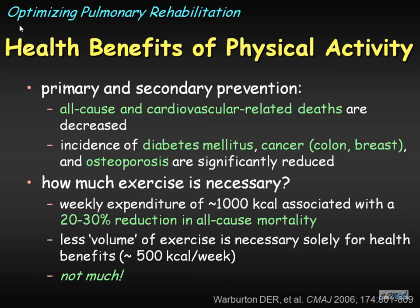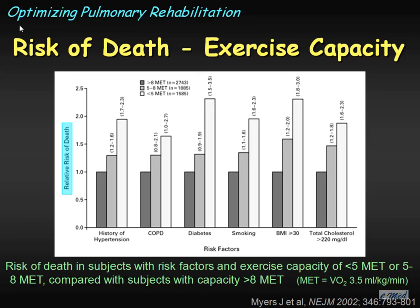I like this work from Jonathan Myers, published in the New England Journal in 2002. This is a very unique population — men referred for cardiac stress testing, followed for a period of time with a number of risk factors including hypertension, COPD, diabetes, smoking, obesity, and hypercholesterolemia. This shows the relative risk of death for individuals who were fit, moderately fit with an estimated MET of 5 to 8, and then unfit. What is obvious is that for all of these individuals — thousands of them with various risk factors including COPD — their correlation with mortality is quite striking with degree of fitness.